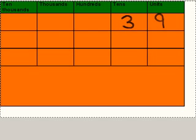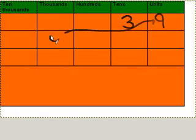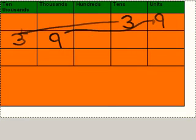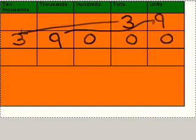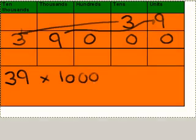I'm going to show you how to multiply thirty-nine by a thousand. When you multiply nine by a thousand, the nine units move from the units column along to the thousands column, so the nine ends up in the thousands column. Similarly, the three moves along three columns as well, so the three ends up in the ten thousands column. We need three zeros to fill in our number grid. So thirty-nine times a thousand equals thirty-nine thousand.